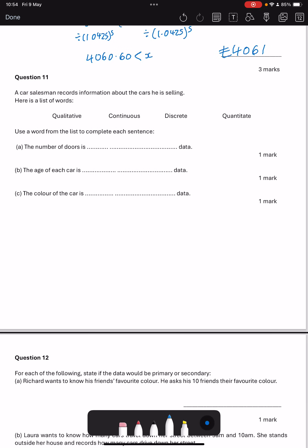Question 11. A car salesman records information about cars he is selling. We've got a list of words qualitative, continuous, discrete and quantitative. And we want to pick a word for each of them. The number of doors. Well that's a number. So it's going to be quantitative and it's also going to be discrete. You can't have 0.5 or 0.6 of a door. The age. Age is continuous because we could keep measuring it to a year, to a month, to a week, to a minute, to a second, etc.